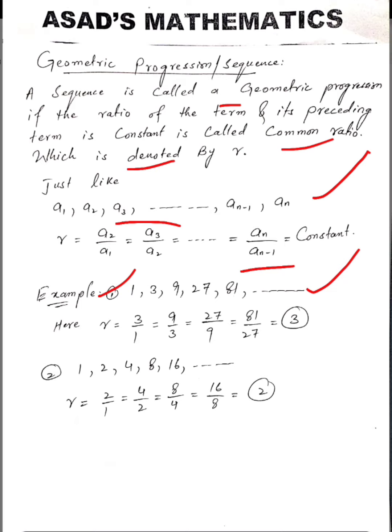First, we find the ratio between 3 and 1, which is 3/1. Then we find 9/3, then 27/9, and finally 81/27. All the ratios are constant.